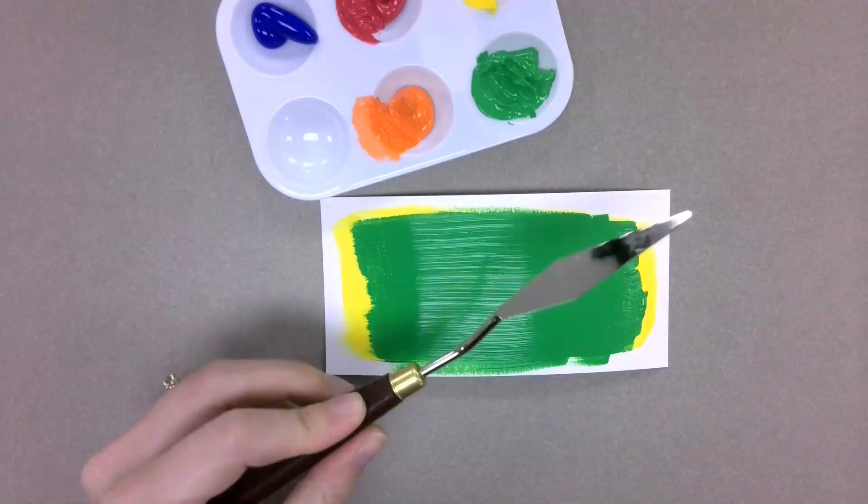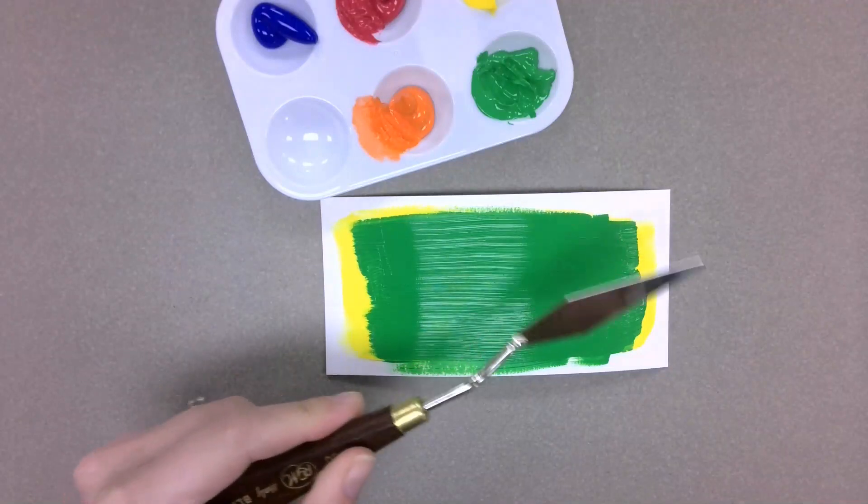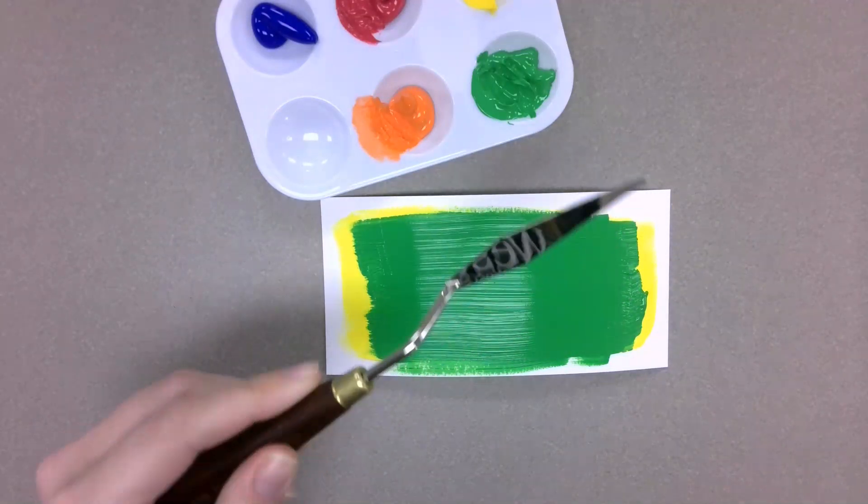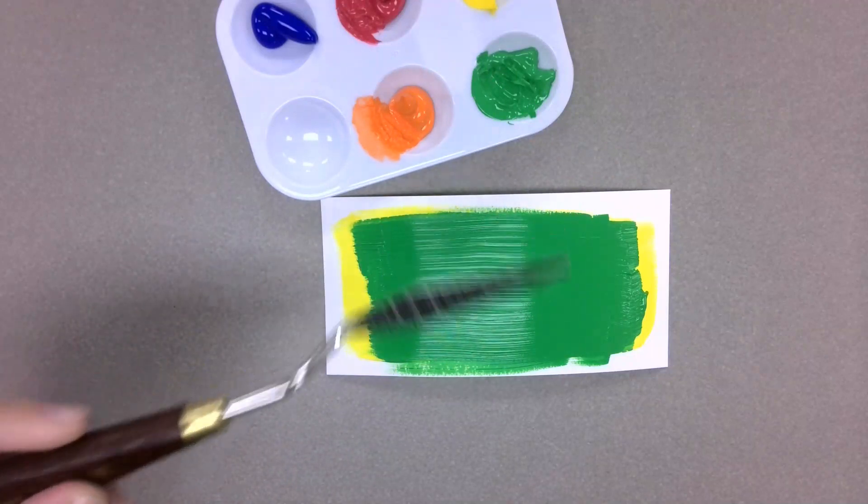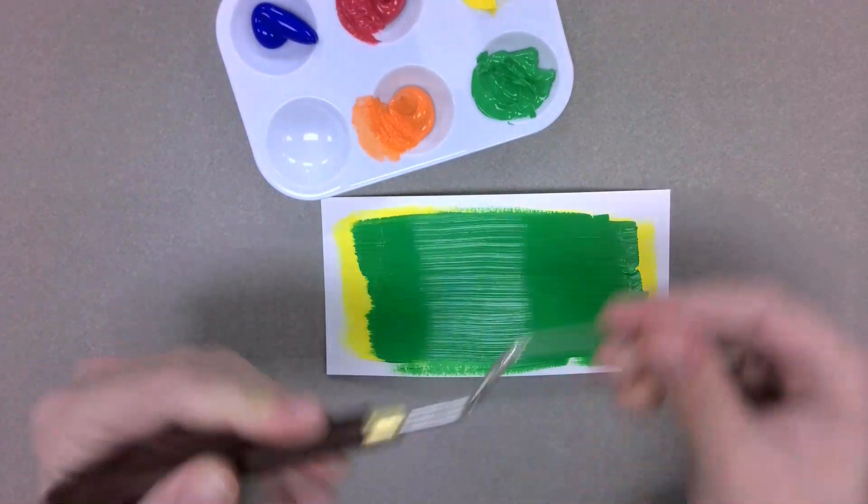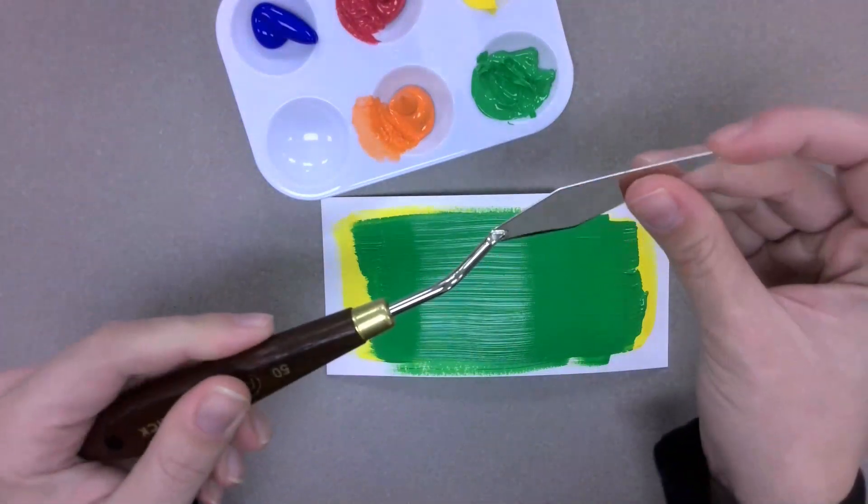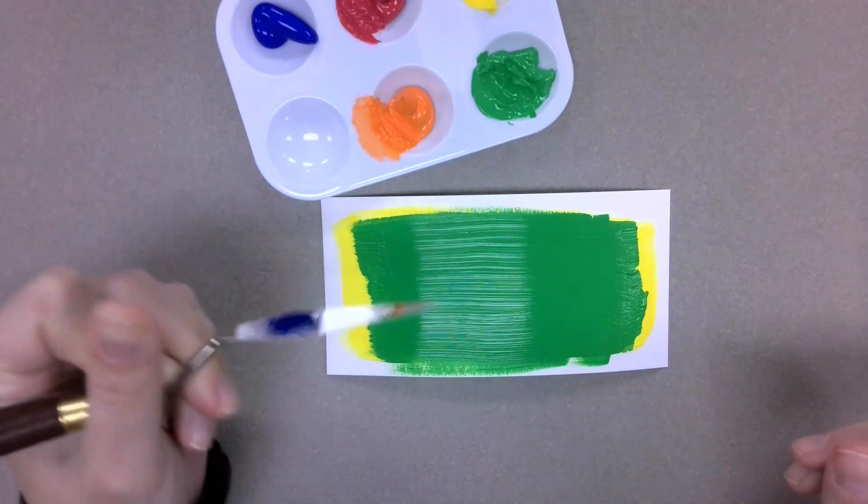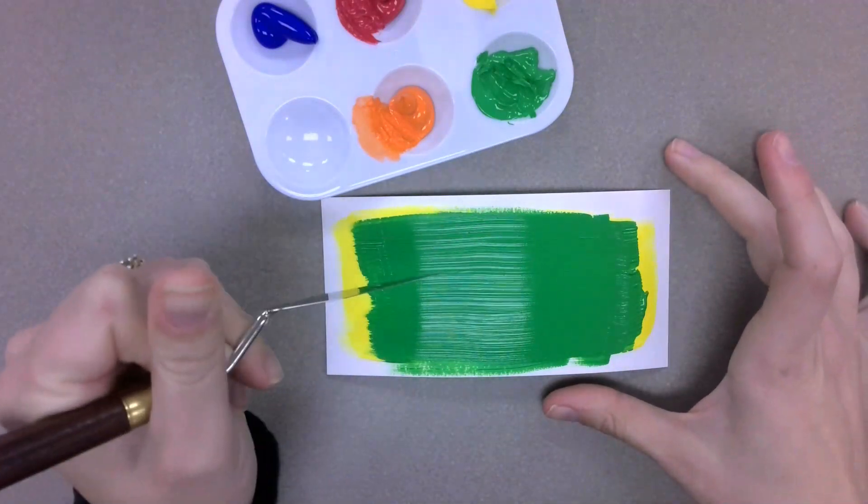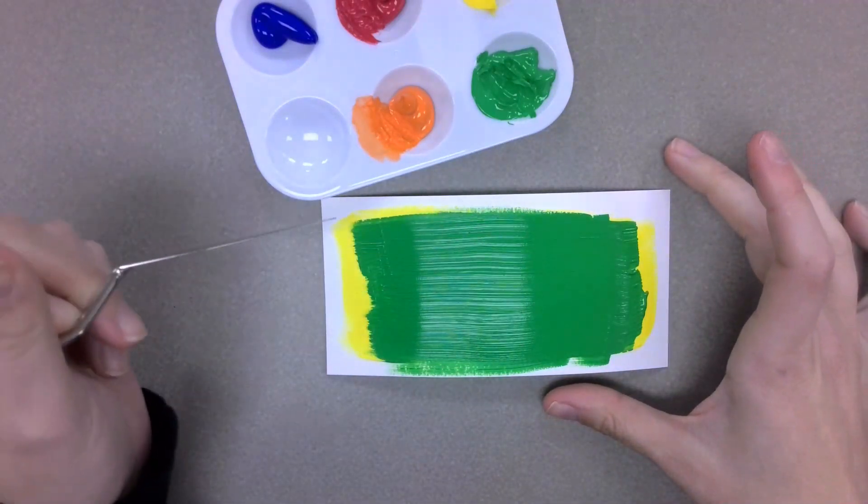And then I'm going to take a palette knife. Your classroom will have several different types of palette knives. Some will be plastic. I have some metal ones in my room. But you'll need a more pointy one that has a pointy end. And you're going to use this like a drawing tool and scrape away some of the green to show the yellow underneath.